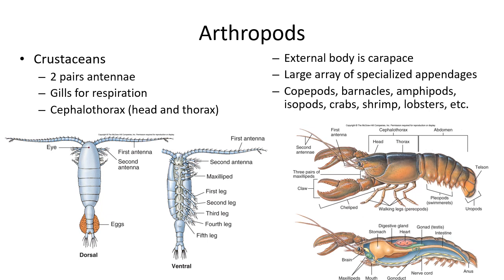Marine arthropods include the crustaceans — most are marine, though some are terrestrial. They have two pairs of antennae, the head and thorax combined into the cephalothorax, and their body covering is called a carapace. They have a large array of different appendages such as lobster claws, walking feet, and sensory structures. This includes copepods, barnacles, amphipods, isopods, crabs, shrimp, and lobsters.